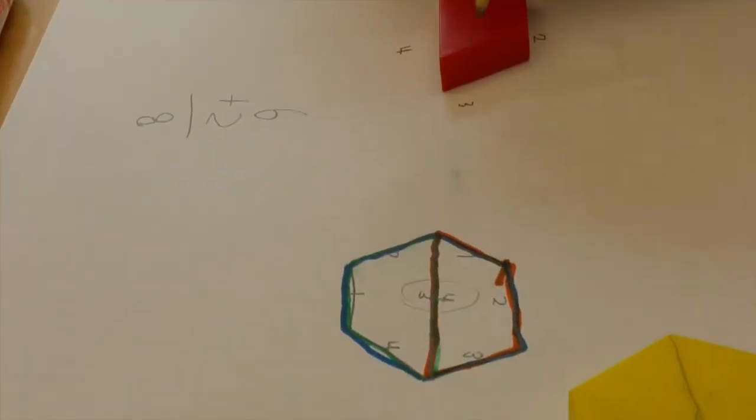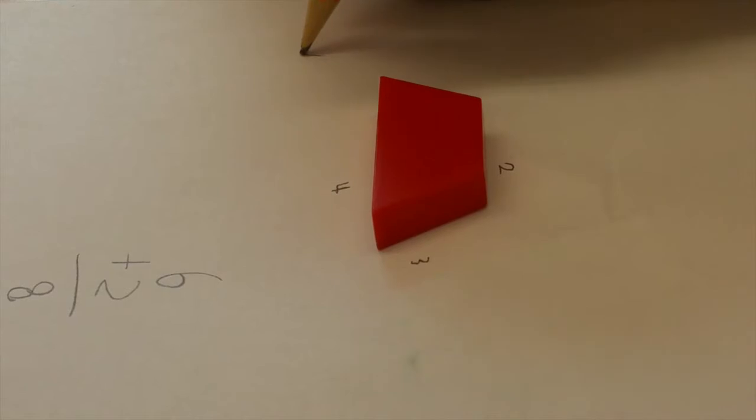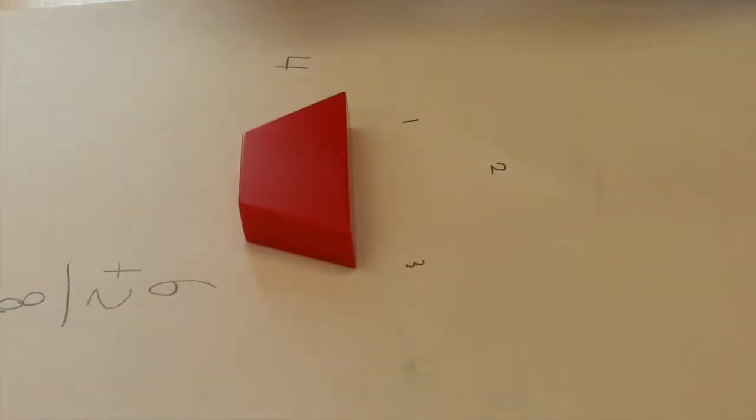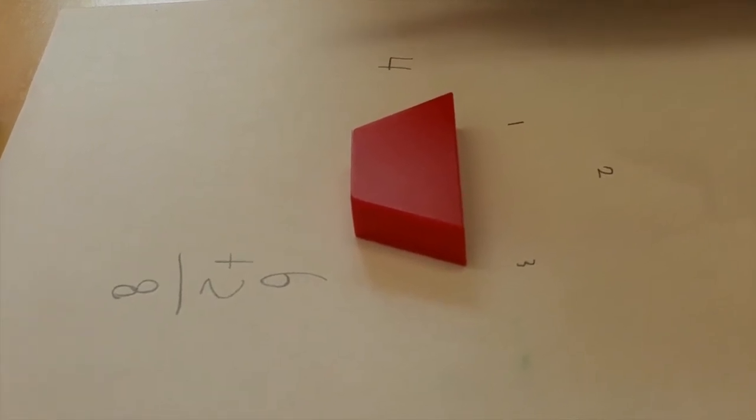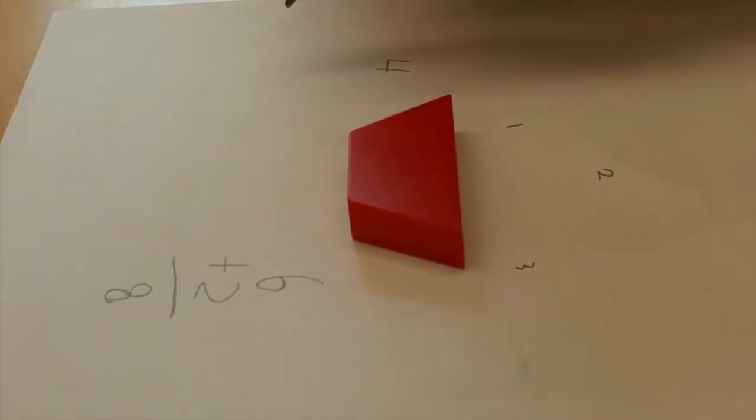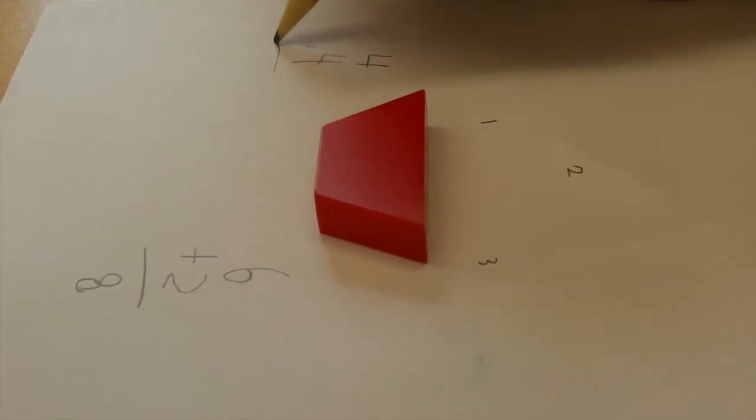How many sides does a trapezoid have? It has four sides. And what if we turned it over and we had another one? How many sides do we have? Eight. So four plus four would equal eight.